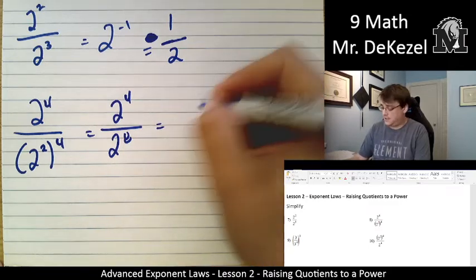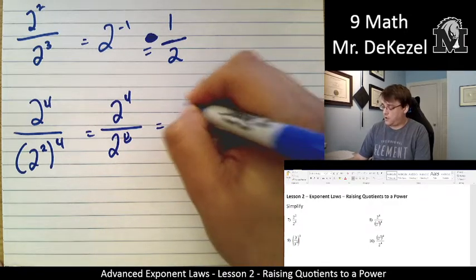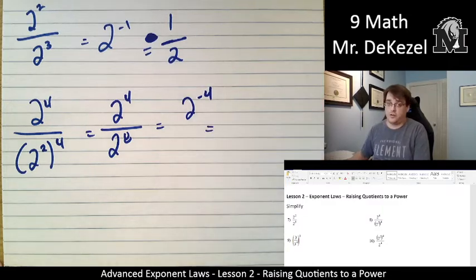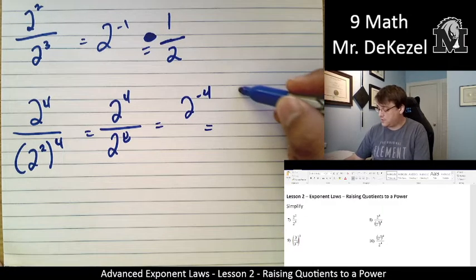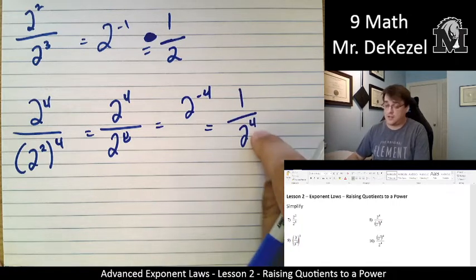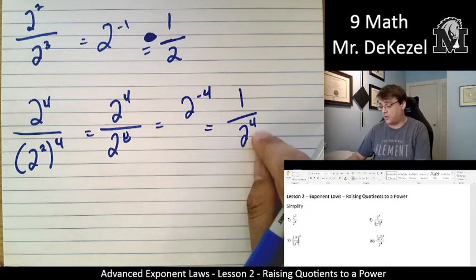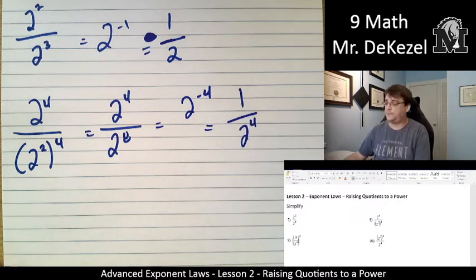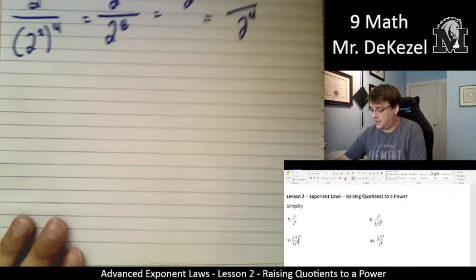4 minus 8 equals minus 4, so 2 to the minus 4, and then we flip that over because we don't like negative exponents. That's 1 over 2 to the power of 4, and in this one, I kept the power because it was not 1. Anything other than 1, I have to write. Let's go to the next one.